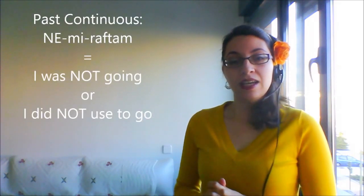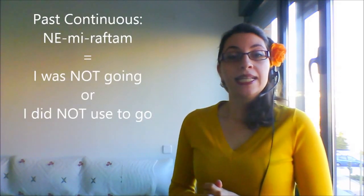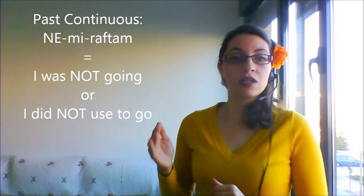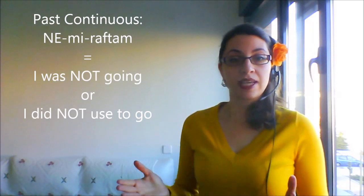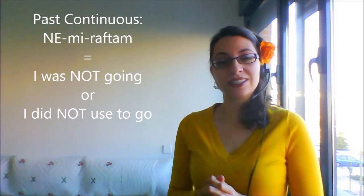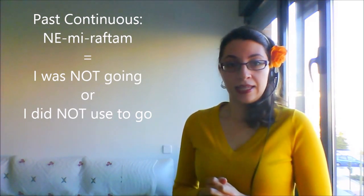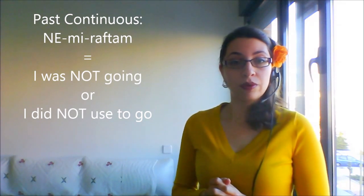Why do my students get confused? Because sometimes, despite the fact that a verb is a past tense verb, we use 'ne' instead of 'na'. For example, in the case of past continuous, we have a verb like 'ne miraftam' — I was not going. Technically it's a past tense verb, a past continuous tense, but we're using 'ne' instead of 'na'. So how do we know in what cases to use which form?